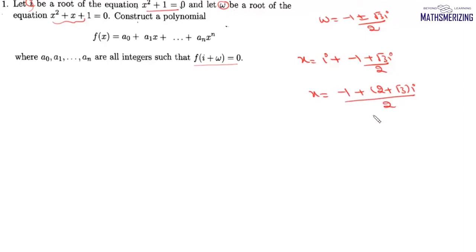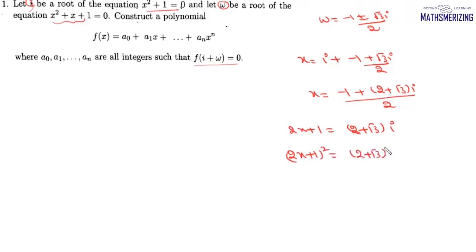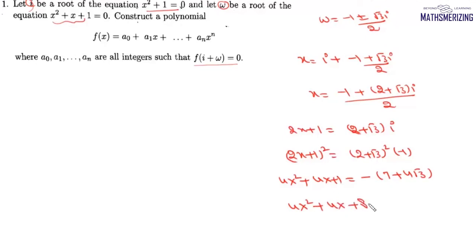We need to find a polynomial whose root is this value. We write 2x + 1 = 2 + √3·iota. Now squaring both sides, (2x + 1)² = (2 + √3)²·iota², and since iota² = -1, we get 4x² + 4x + 1 = -(2 + √3)², which simplifies to give 4x² + 4x + 8 = -4√3.